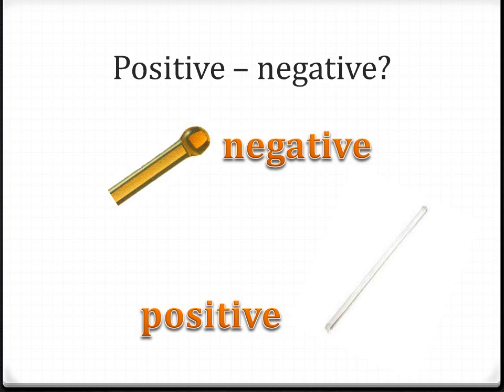Franklin decided to say that the glass rod had a positive charge, and that the amber rod had a negative charge. We use ebonite today in place of amber. Why did he choose glass as positive and amber as negative? Well, no real reason. They were just different and opposite to each other, and so he picked one to be positive and the other to be negative.